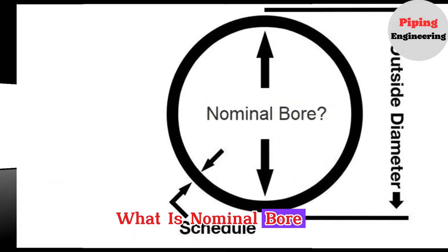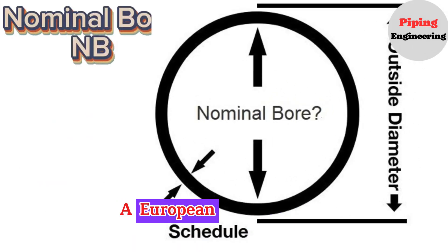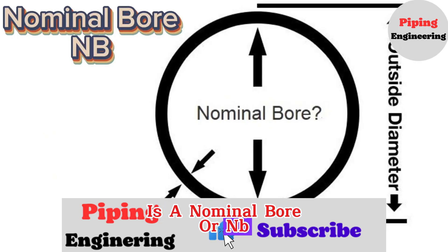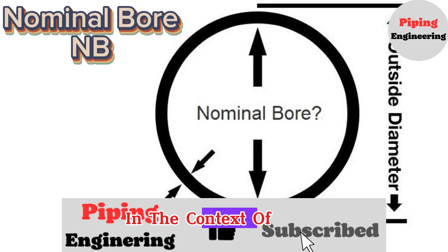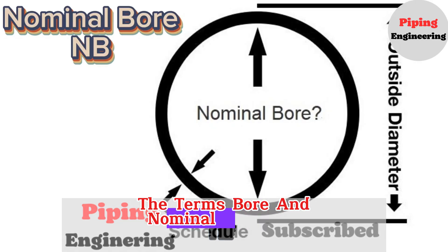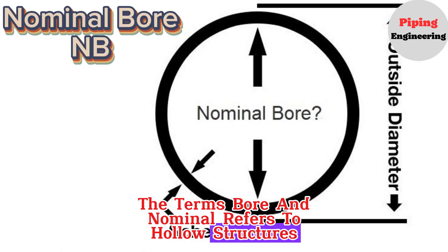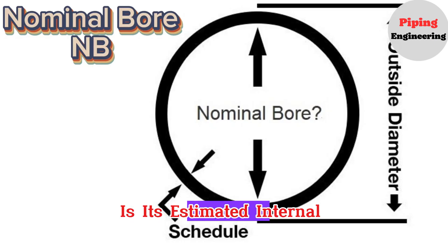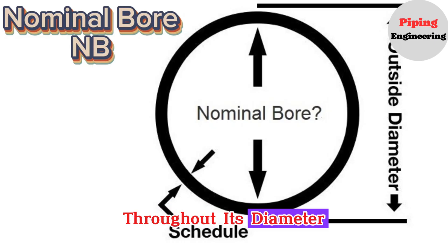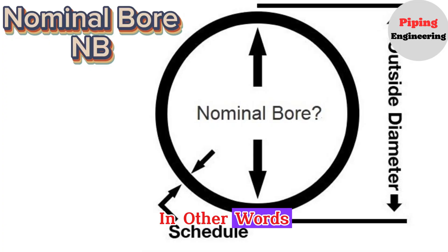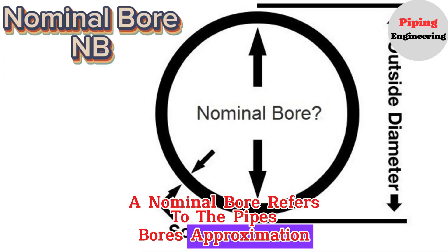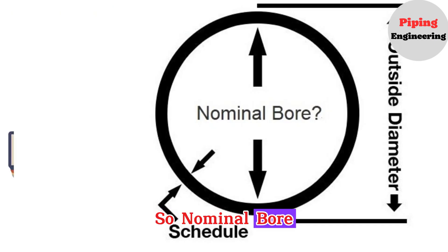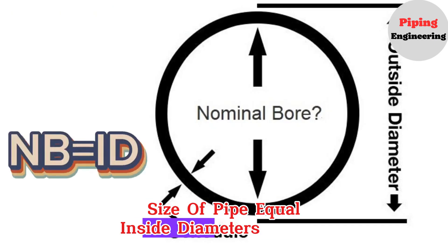Nominal bore, or NB, is a European standard for indicating pipe size. In the context of pipes, the terms bore and nominal refer to hollow structures. The pipe's nominal bore is its estimated internal measurement throughout its diameter. In other words, a nominal bore refers to the approximation of the pipe's bore size. So, nominal bore size of a pipe equals the inside diameter of the pipe.